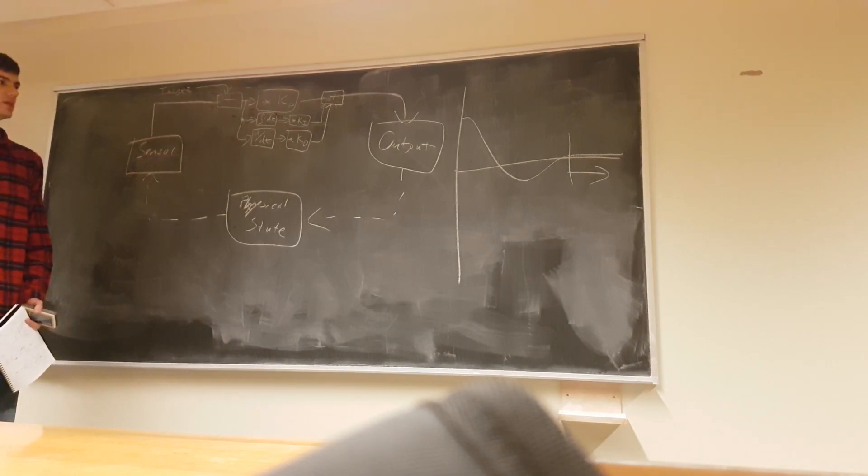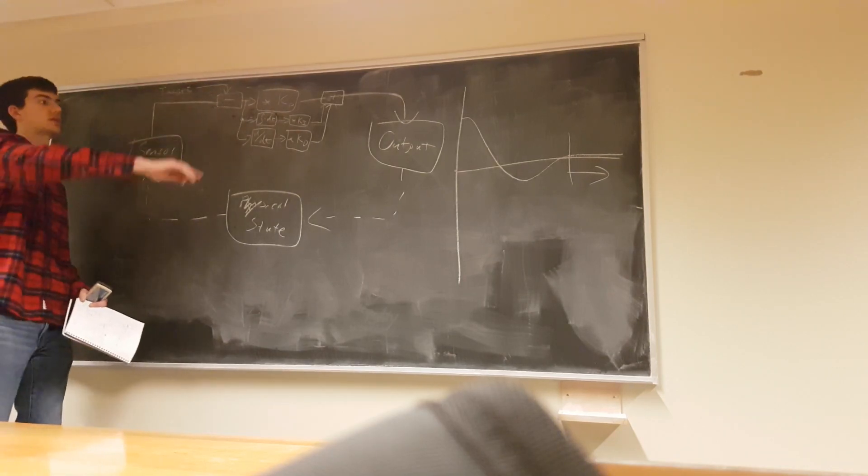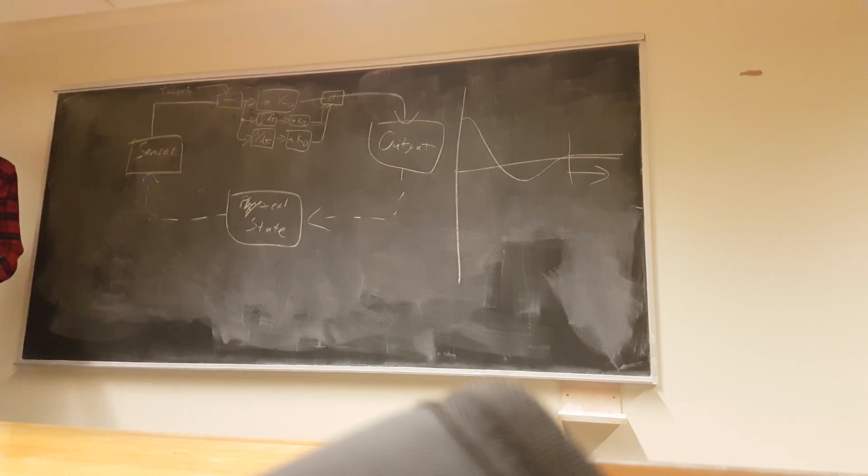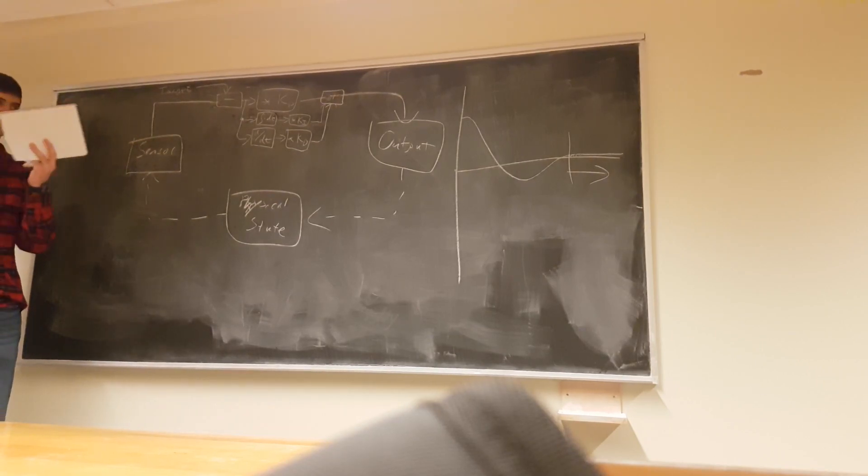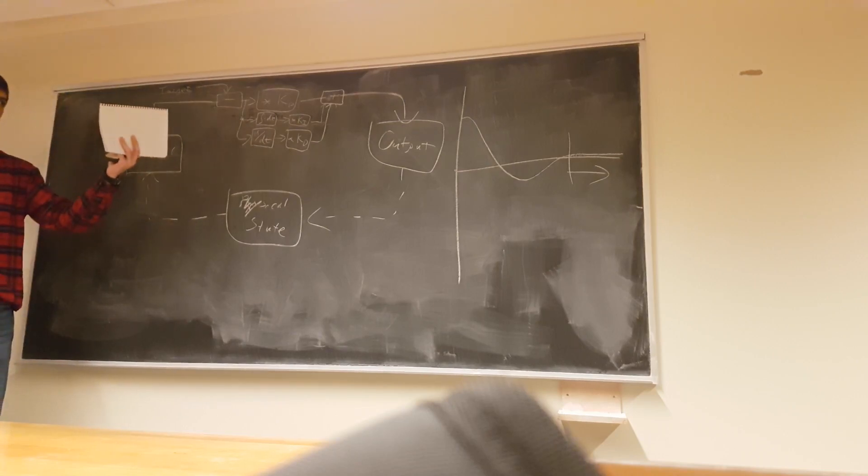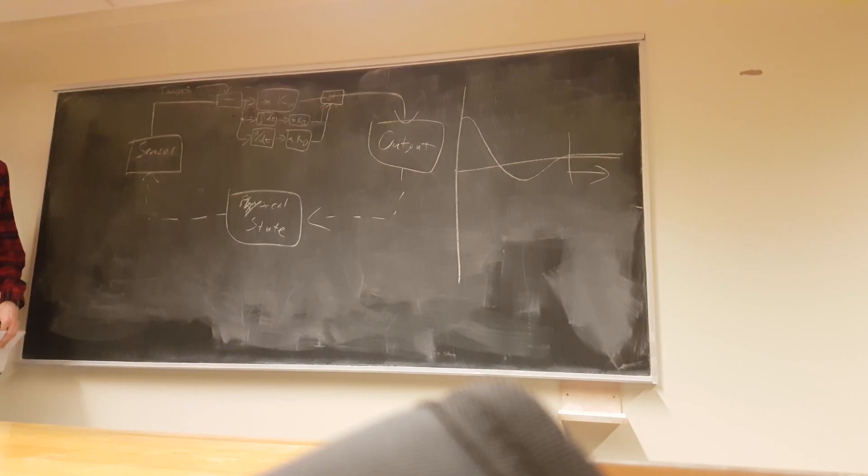Now, typically, this system that we have right now is called the PID control loop. PID standing for proportional integral derivative. It's the most common building block of feedback loops used in robotics. But this is a very pure representation of it. Often you'll have other considerations.